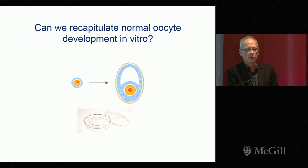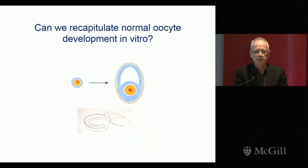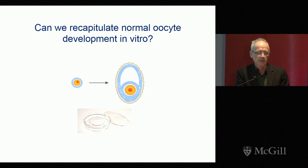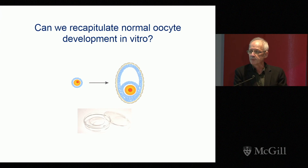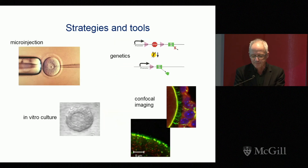Thirdly, we're trying to recapitulate normal oocyte development in vitro in order to improve the culture systems that are out there, so that we can get a higher rate of development and get better quality oocytes at the end — not only to have a better experimental system, but also possibly for clinical or therapeutic application in the future.